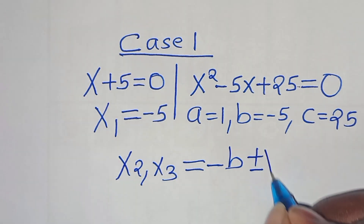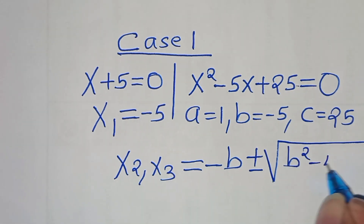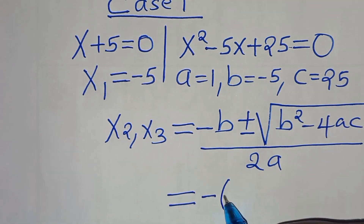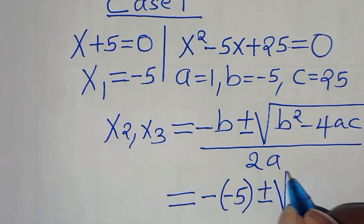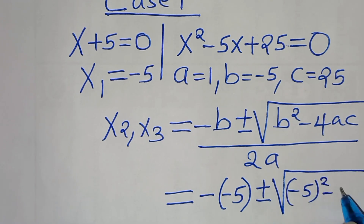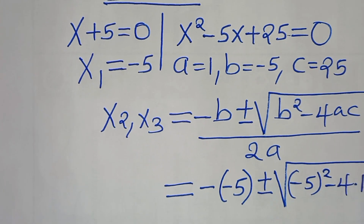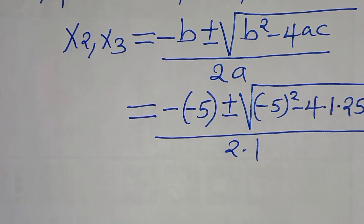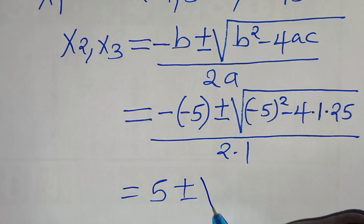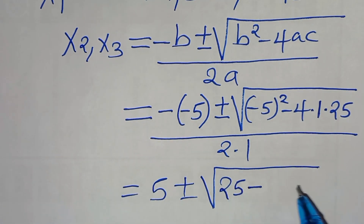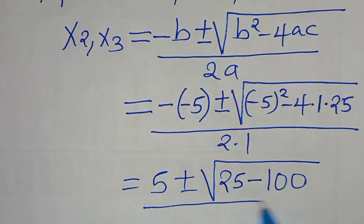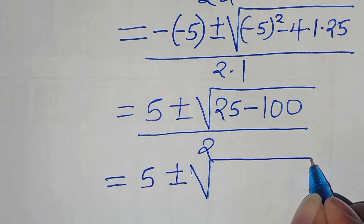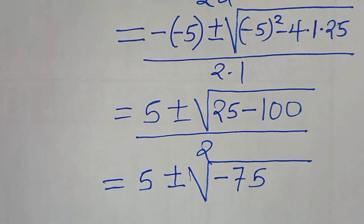Substituting: minus of minus 5, plus or minus the square root of (−5)² − 4(1)(25), divided by 2(1). This gives 5 plus or minus the square root of 25 − 100, divided by 2, which is 5 plus or minus the square root of −75, divided by 2. We express √(−75) as √(25 × 3 × −1) = 5i√3.